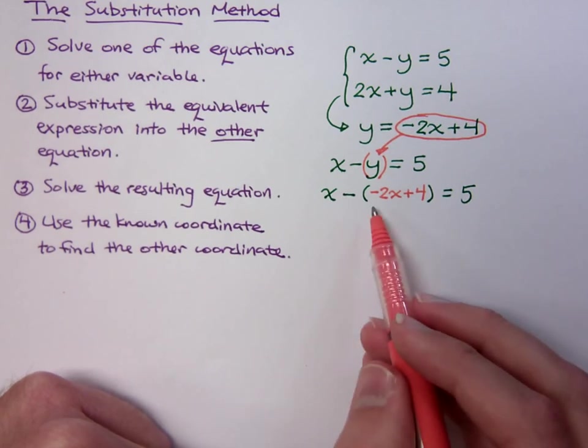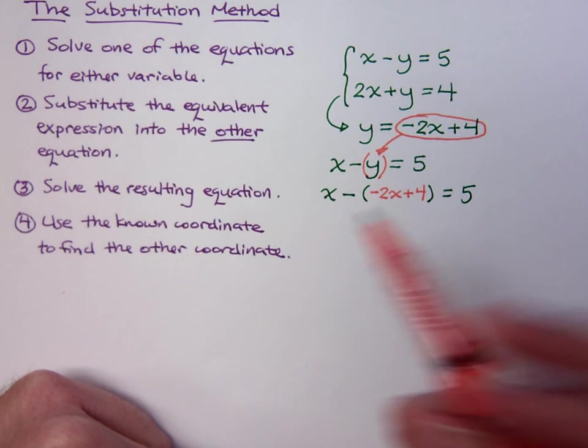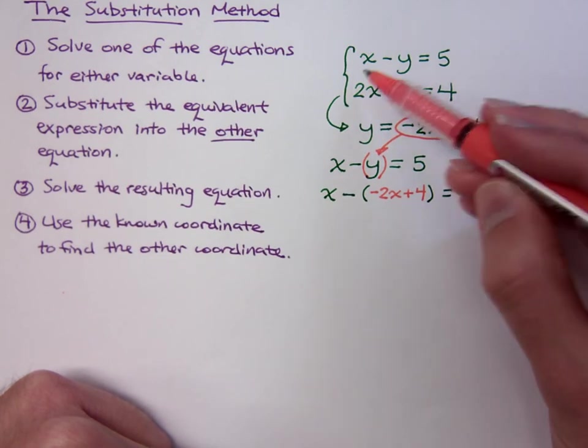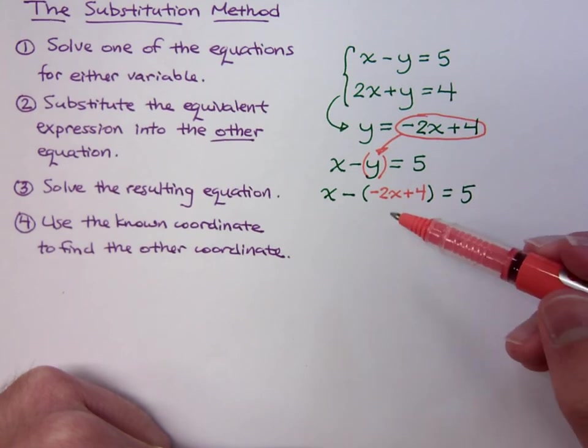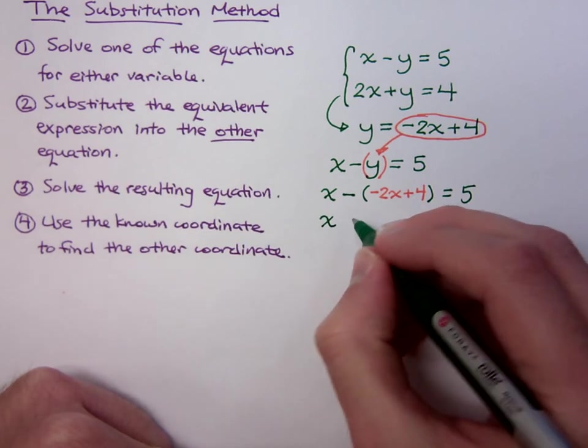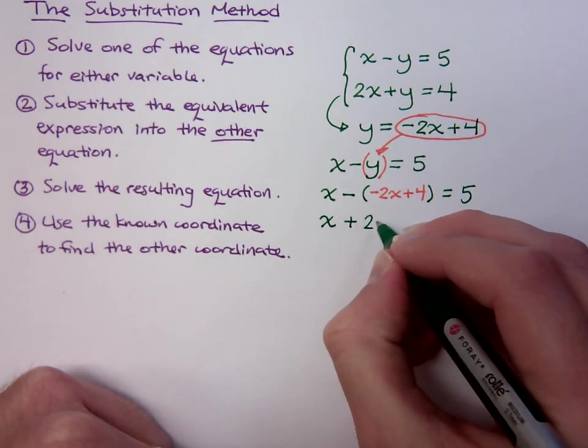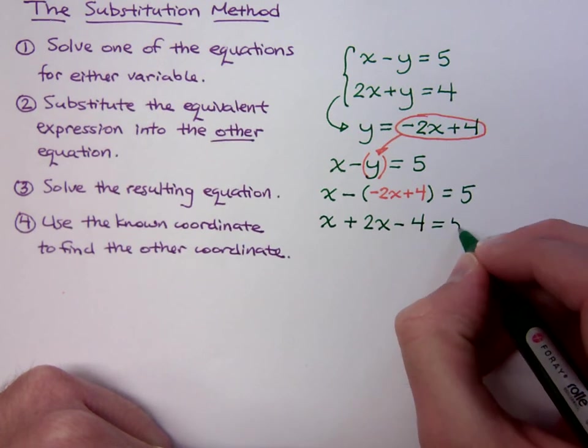Well once I've done my substitution, I just have to do the solving here. You had two different equations with two variables, x and y. Now you have just one equation with one variable. So when I work this out, make sure you distribute the negative correctly. That becomes a positive 2x minus 4 and that equals 5.